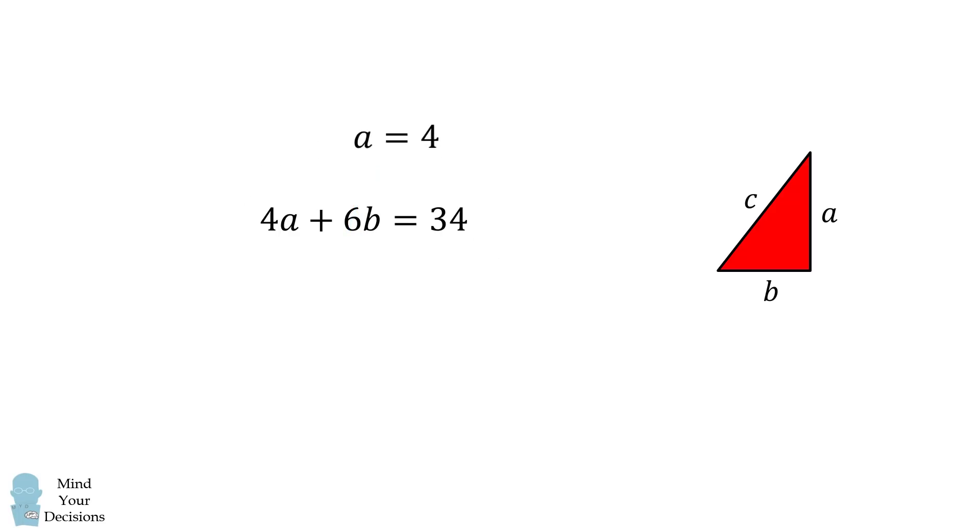From here we can substitute into this equation, and we'll get 16 plus 6b is equal to 34, which means 6b is equal to 18, or b is equal to 3.